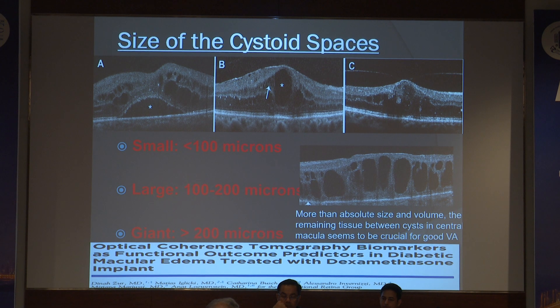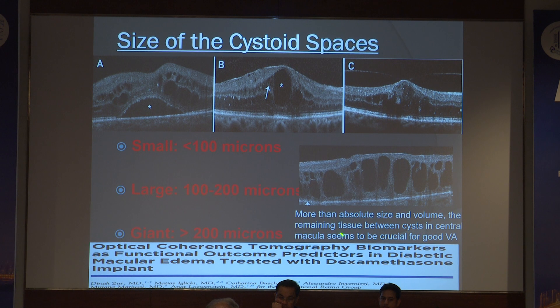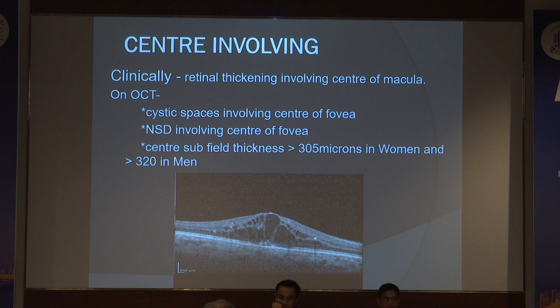The most important biomarker is the bridging retinal processes (BRP), which are one of the important biomarkers. For center-involving DME, the cystoid spaces involve the center, and the central subfield thickness is more than 305 microns in women and more than 320 microns in men.